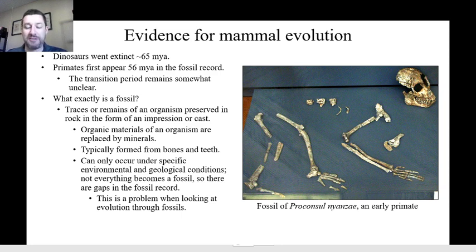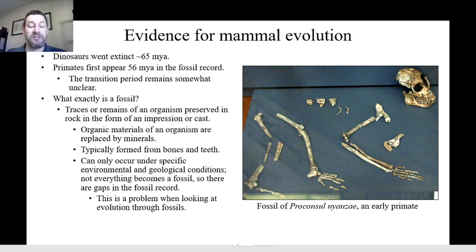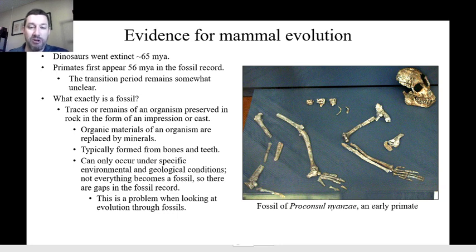Not every animal becomes a fossil. Not every animal dies in a place where it can become a fossil. The best way to become a fossil is to die in something like a swamp or a muddy riverbank where you'll be quickly covered up so the bones can't be taken away by predators or worn out by the environment, and where the minerals around you are conducive to replacing the bone. Sediment is really good — like a muddy riverbank — because as the bone dissolves, it will gradually be replaced by sedimentary material, which will then turn into rock over time. If you die on the site of a volcano, you will not turn into a fossil because the igneous rocks in that area will not replace your bones with mineral material in the correct amount of time.